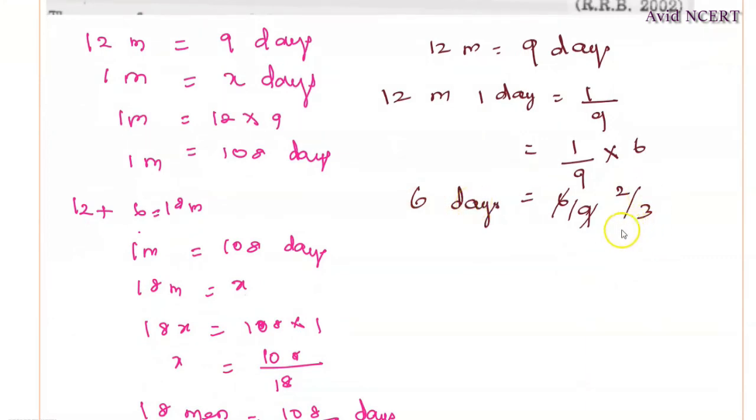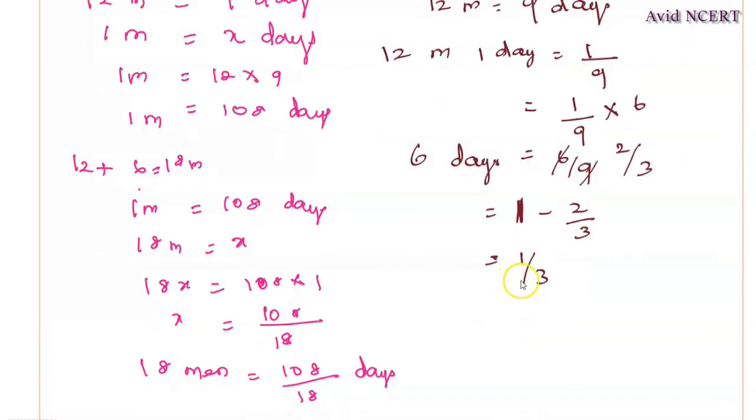They completed 2 thirds of the work. So the remaining work equals 1, which is the whole work, minus 2 thirds. Using LCM: 1 times 3 minus 2 equals 1, which is 1 by 3. So 1 third of the work is remaining.